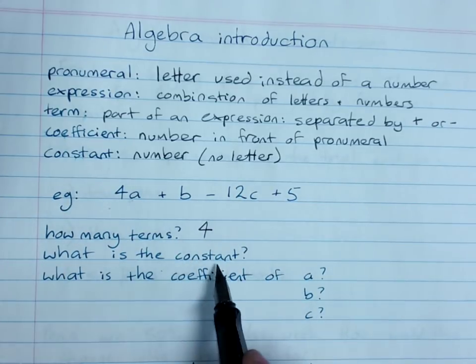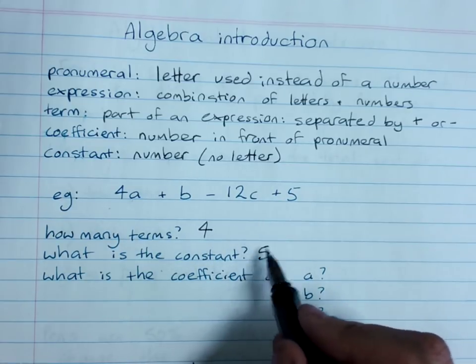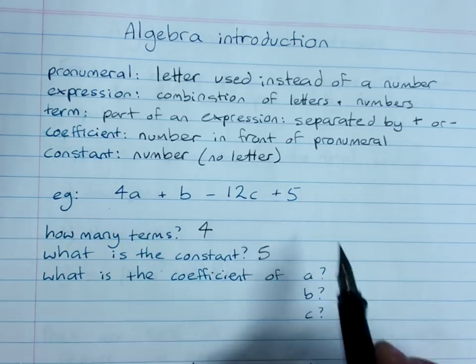What is the constant? That's the number that's on its own, 5. We could say plus 5, and if it was a negative 5, we'd definitely say negative 5 there.